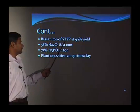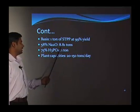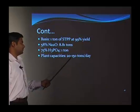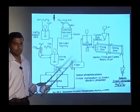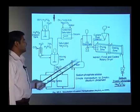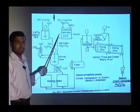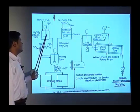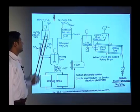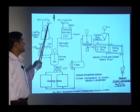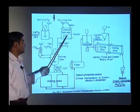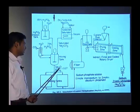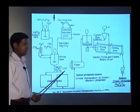For producing 1 ton of STPP at 99 percent yield, we require 8.81 Na2O which is 58 percent, and 1 ton of phosphoric acid. The plant capacity will be 20 to 150 tons a day. The PFD for STPP manufacturing uses soda ash and phosphoric acid as raw materials. Here the phosphoric acid and the soda ash are diluted and sent to the mixing tank, where we want to have the ratio of Na2O to P2O5 at 1.67.